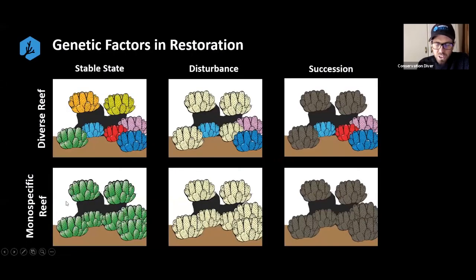When we have the stable state where the ecosystem is in a kind of stasis where things aren't changing too radically, then we can get lots of the same-looking corals growing.